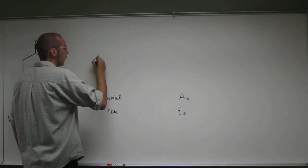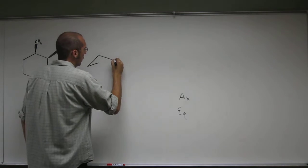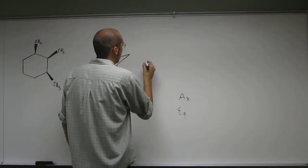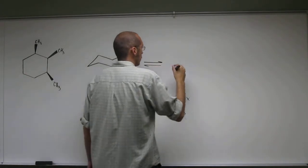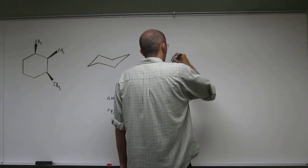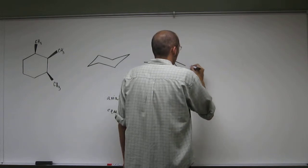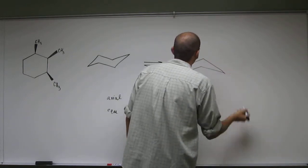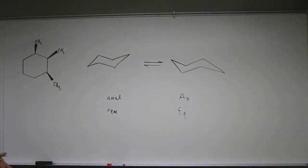So the first thing again you want to do is draw the actual cyclohexane ring, and then show the ring flip structure. Like I always say, get good at this prior to the exam, because they're not the easiest thing to do.